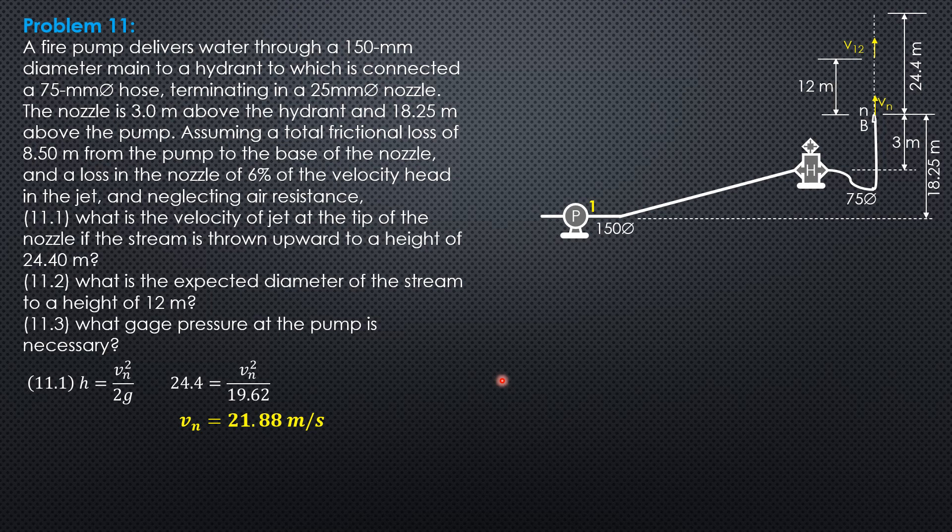Then, 11.2, what is the expected diameter of the stream to a height of 12 meters? Since this is a liquid and air resistance is negligible, Qn equals Q at that level. Q12 equals Qn. We do not consider pi over 4 anymore, so that answer will be in mm.